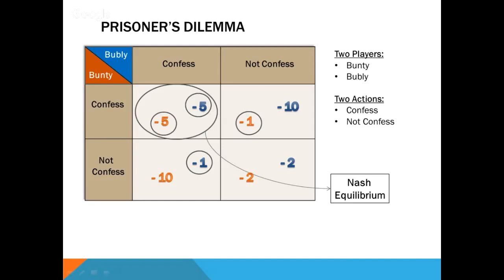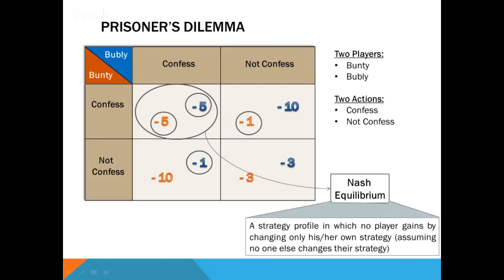Thus, the strategy profile where both Bunty and Bubbly choose to confess is called a Nash Equilibrium. More formally, a Nash Equilibrium is a strategy profile in which no player gains anything by changing their own strategy. By deviating from a Nash Equilibrium strategy, a player will not be better off given that the other players stick to their Nash Equilibrium strategies. It captures a stable, self-enforcing agreement among players — the action profile a social planner would recommend, ensuring no one would deviate.